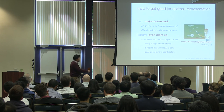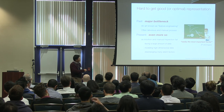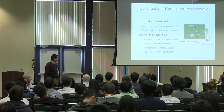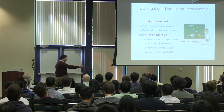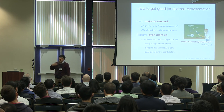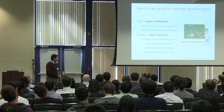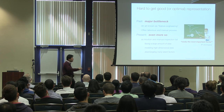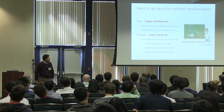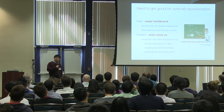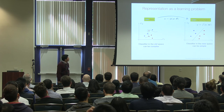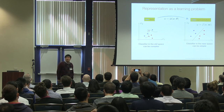For a very long time, coming up with a good representation of data — sometimes called feature engineering — has been the major bottleneck for applying machine learning algorithms to building practical systems. And nowadays, because of the amount of data, its dimensionality, and the complex patterns involved, it's even more difficult to manually come up with good representations. So you can think of representation as a learning problem itself.